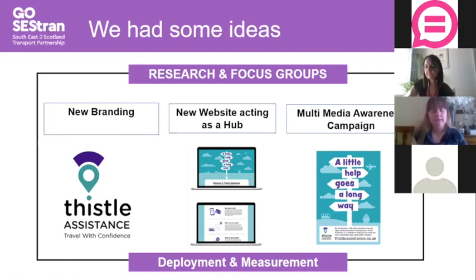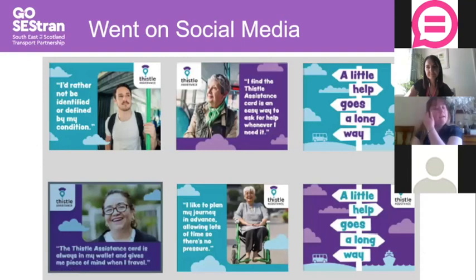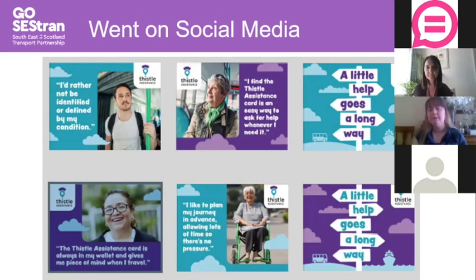When you get your card in the post, it comes in a leaflet with stickers, and you put the stickers on the back of the card. We ask you to keep the front of the card plain just for bus operators and train staff — when they see the logo they know what it is, so it's easier to identify. The toolkit includes leaflets, posters, caption story graphics, and social media resources. Thistle Assistance now has its own hub where you can ask questions and get the information you need.